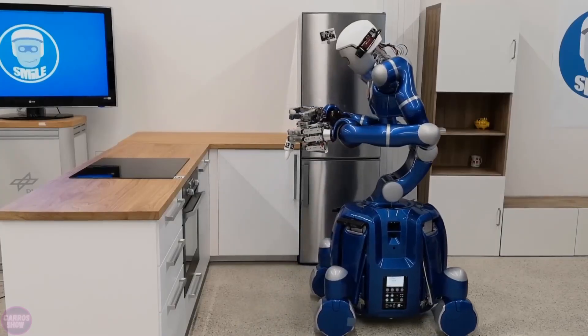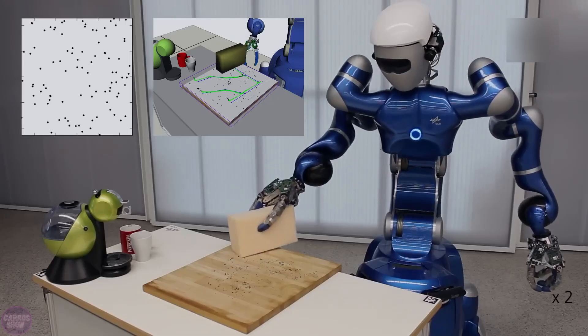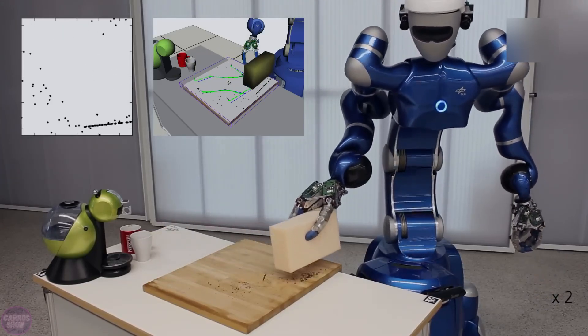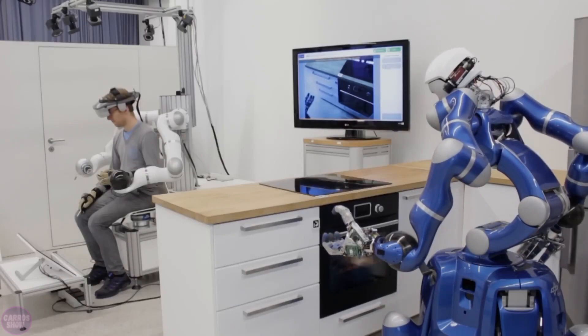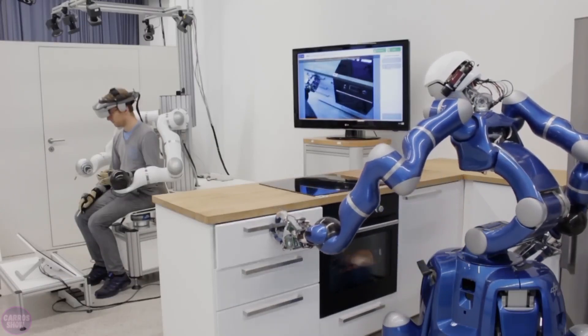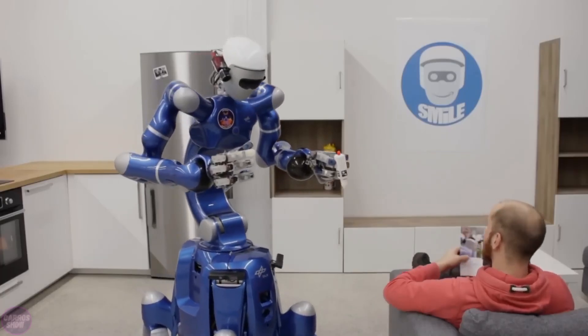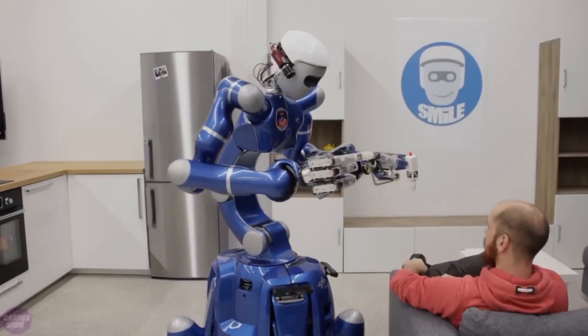The German Aerospace Center has introduced its humanoid robot named Roland Justin, which will serve as a platform for research in autonomous mobile manipulation. This robot is capable of performing complex manipulative operations thanks to its flexible arms and four-fingered hands, allowing it to interact delicately with surrounding objects.